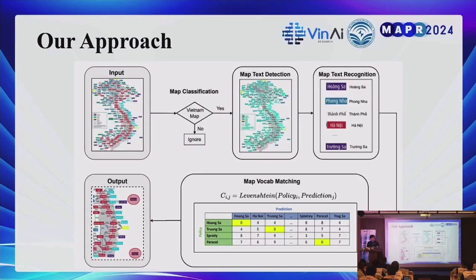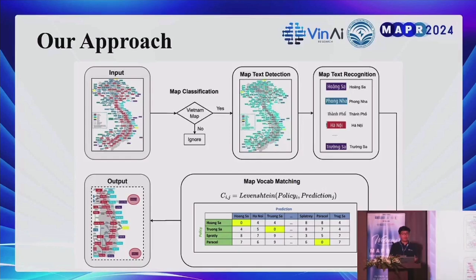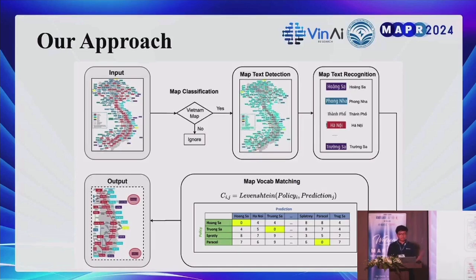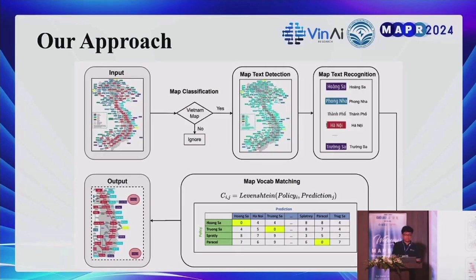Our approach takes an arbitrary multi-resolution image and passes it through the map classification model, which determines whether the image is a Vietnam map or not. If not, it is ignored. If it is a Vietnam map, it passes into the map text detection model, which detects text in the image. The detected text regions are passed to map text recognition using optical character recognition to predict the text. Finally, map vocabulary matching estimates the edit distance between the target vocabulary and the prediction to determine whether the map is valid or not.